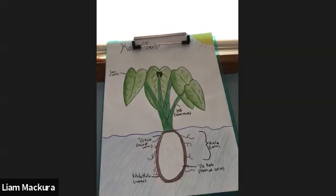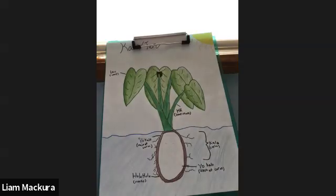Next there's the corm — the big part at the bottom of the kalo — and that is really used in a few ways. You can boil it or fry it and eat it as it is, or some people turn it into flour and use that, mixing it with other foods.